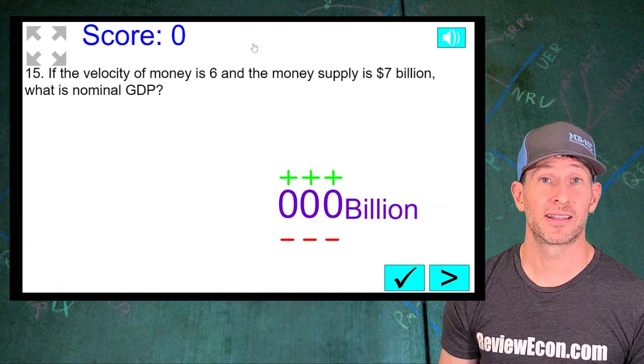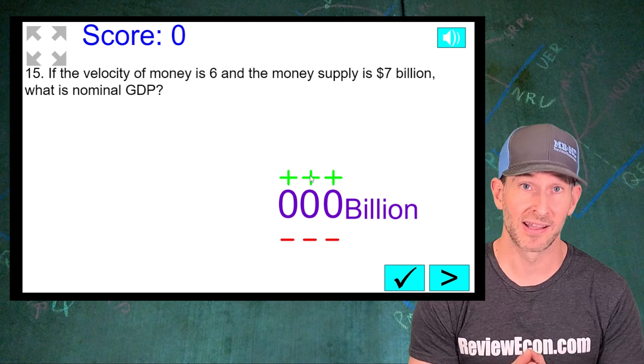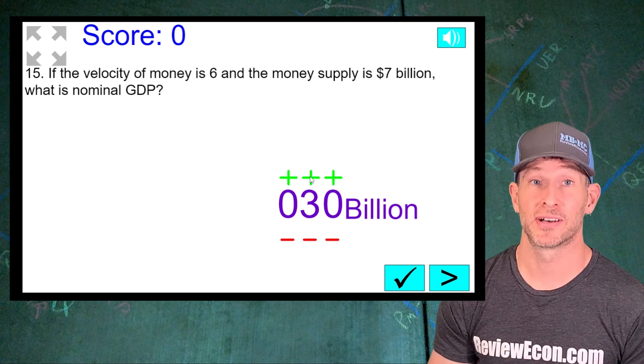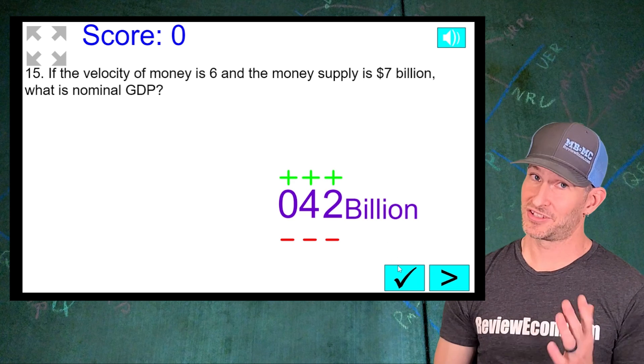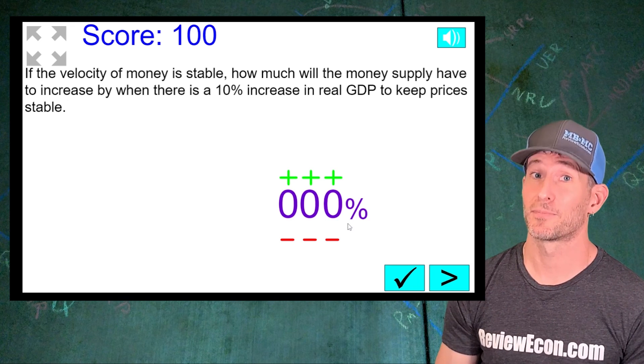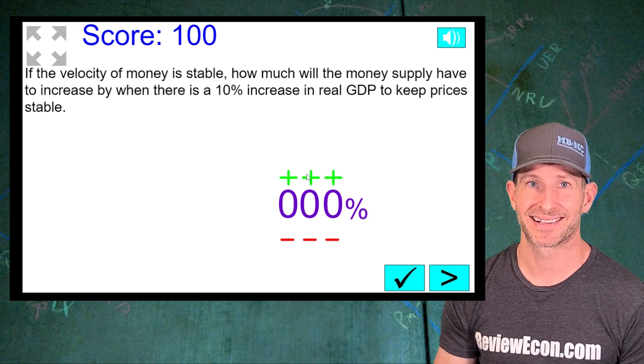So that's it. That is the quantity theory of money. It's not too tricky, but you might want to practice a little bit with the formula. If you're ready to practice it, head over to reviewecon.com and check out the quantity theory of money game. And if you still need help after that, make sure you pick up the total review booklet. It has everything you need to know to ace your microeconomics and macroeconomics exams. That's it for now. I'll see you next time.